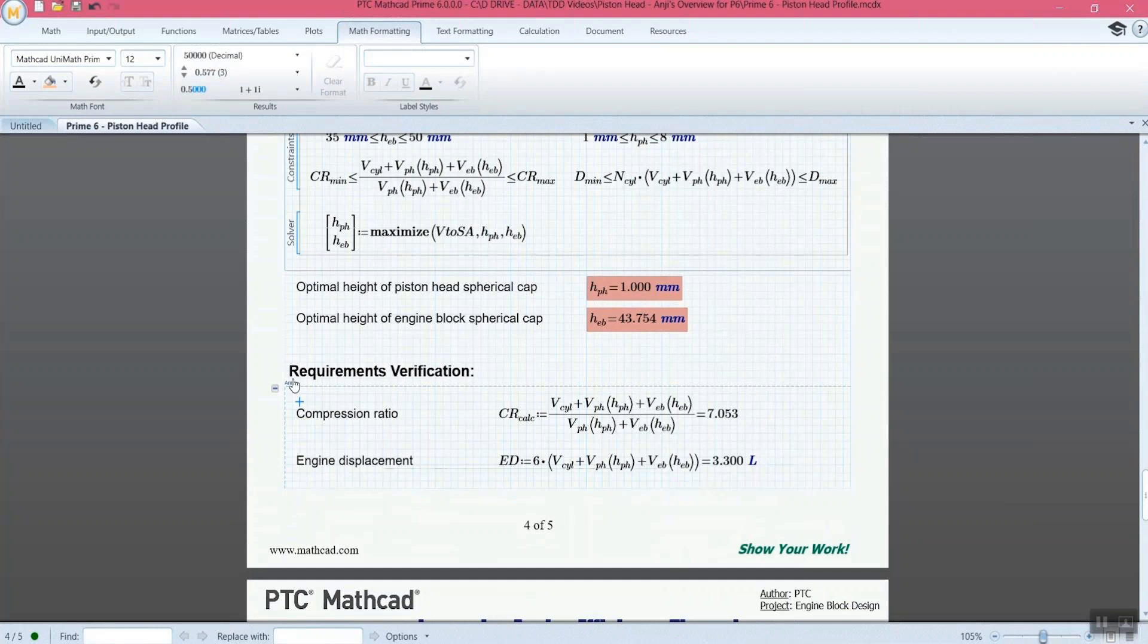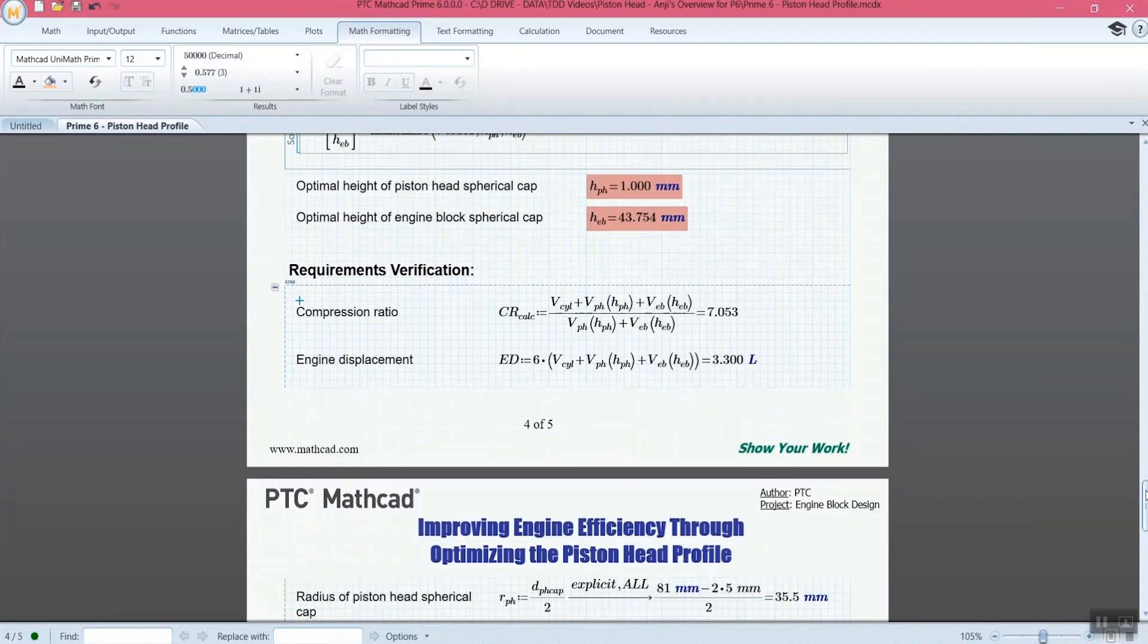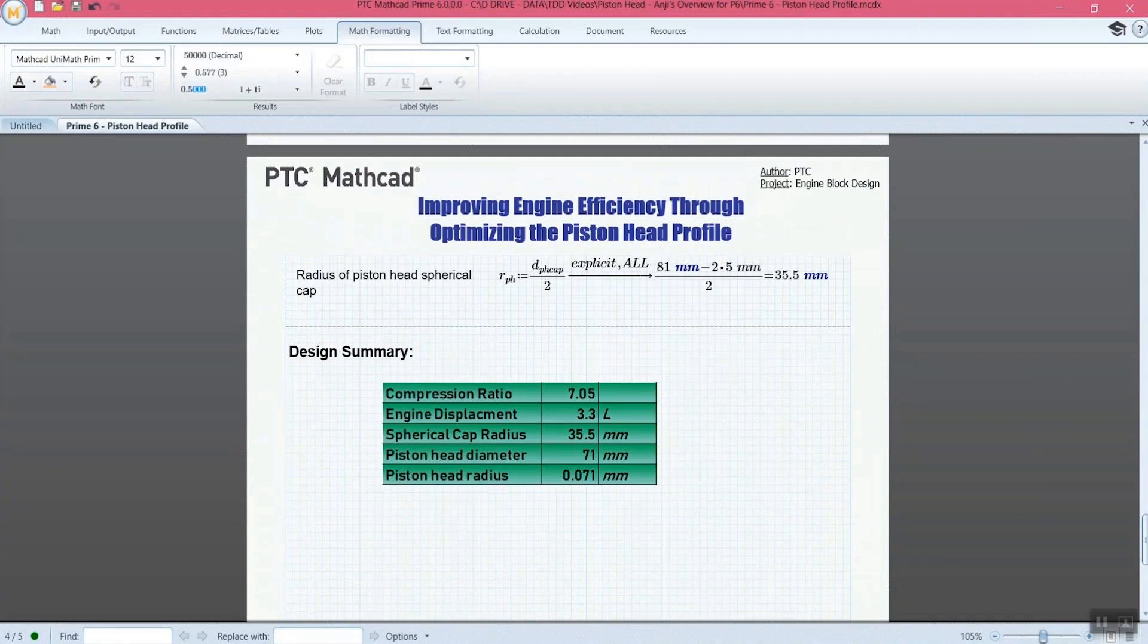We also have this requirements verification section. So our compression ratio, our engine displacement, we're making sure that everything here is within those ranges that we had earlier. So we're just double checking that our requirements are set. And of course, if this isn't crucial, you can collapse that as well.